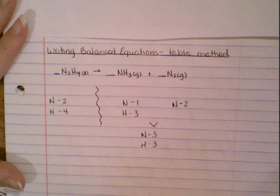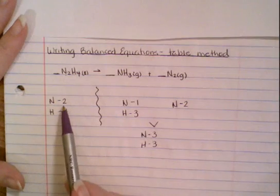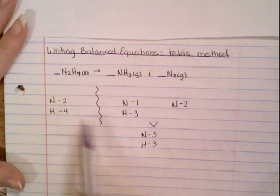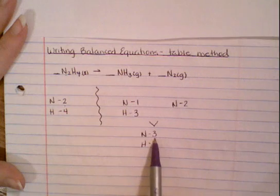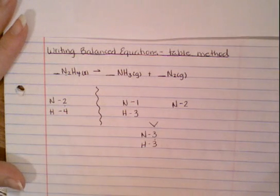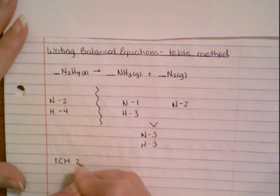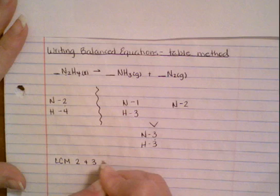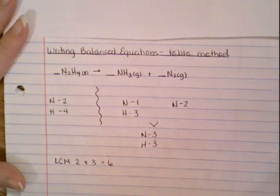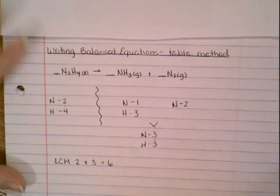Well, let's see. If I look at nitrogen first, I have two here and I have three here. What is the least common multiple of two and three? The least common multiple of two and three is six.